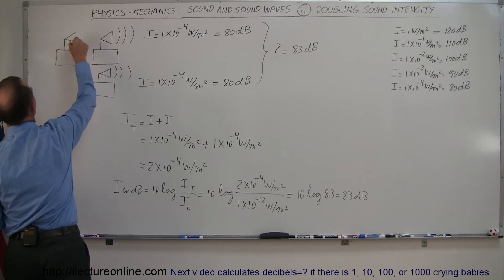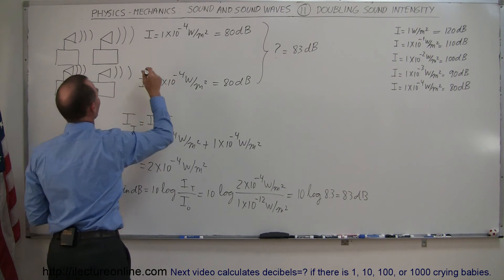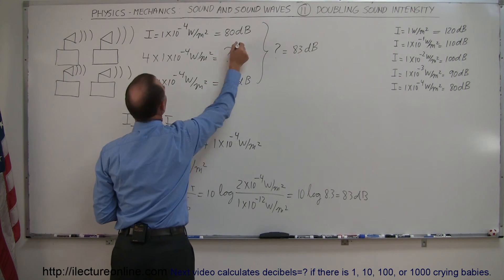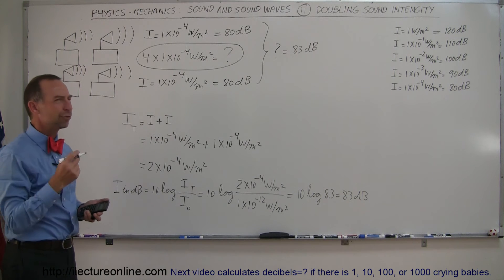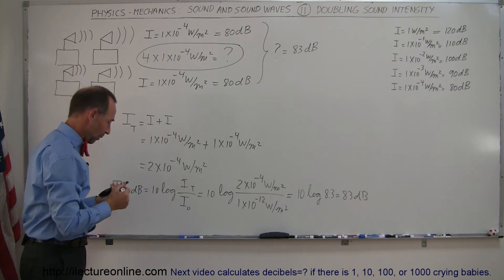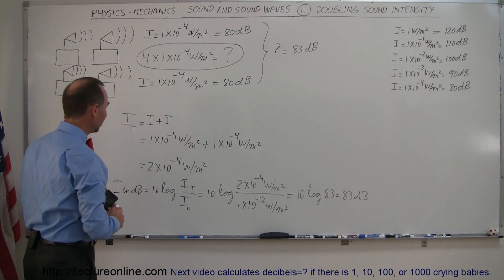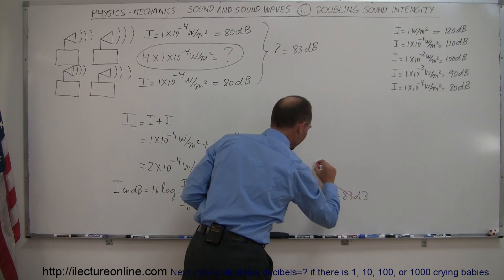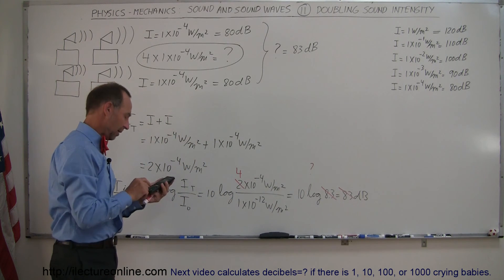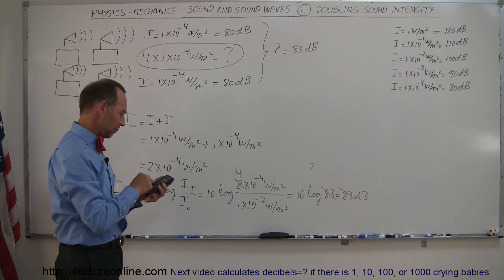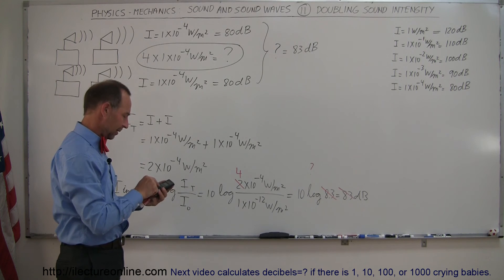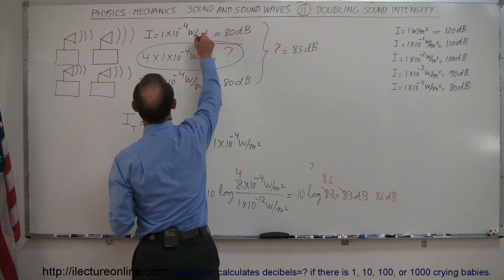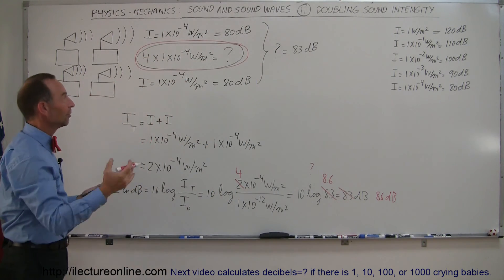What if we had four of them? Now we have the intensity of 4 times 1 times 10 to the minus 4 watts per square meter. How many decibels would that be? Well, 4 is a doubling of 2, so I'd expect another 3 decibels. Using the calculator: 4e-4 divided by 1e-12, take the log — sure enough, this becomes 10 times 8.6, which is 86 decibels. So taking 4 times as much — doubling the 1 to 2, then doubling the 2 to 4 — we get 86 decibels.